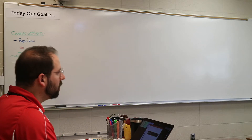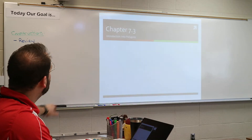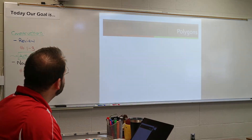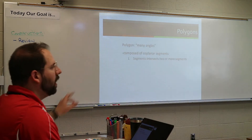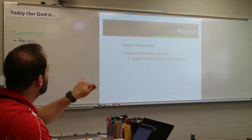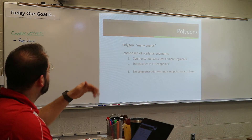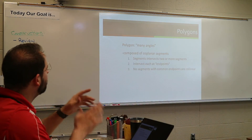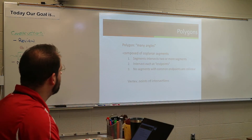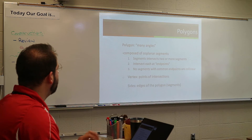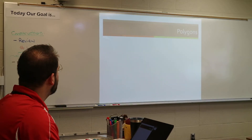Okay, yesterday we talked about what a polygon is. Polygons have many angles. They're made from straight line segments. You can connect them to endpoints. They can't cross over each other. They can't be in straight lines. We had vertices and edges, right? We talked about it yesterday.